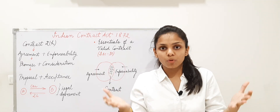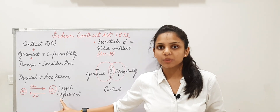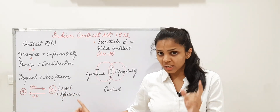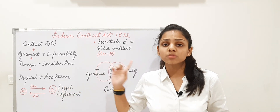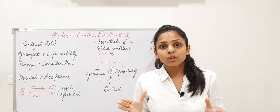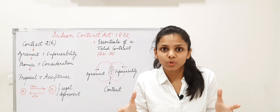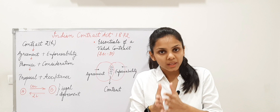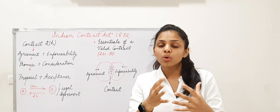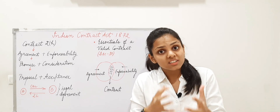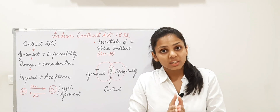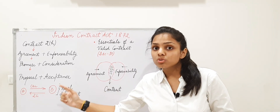When there is a proposal and acceptance, it gives birth to a promise. A has given his promise to B — 'I will give you my car' — and B has given his promise to A — 'I will pay you rupees two lakhs in return.' So there are two promises forming a set of promises. The car is the consideration for B, and the two lakh rupees is the consideration for A. Each party is gaining something and losing something at the same time — this is what consideration means: something in return.